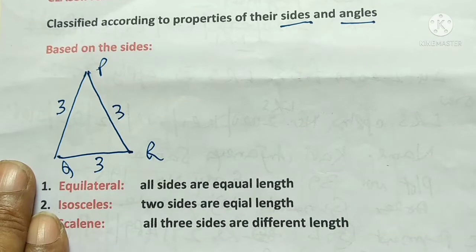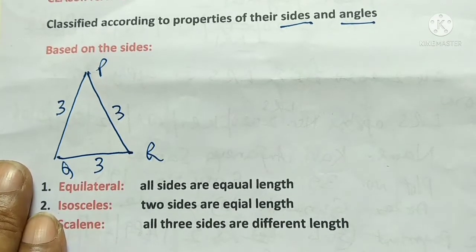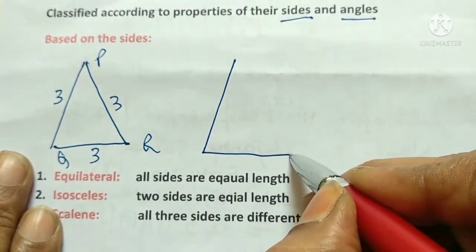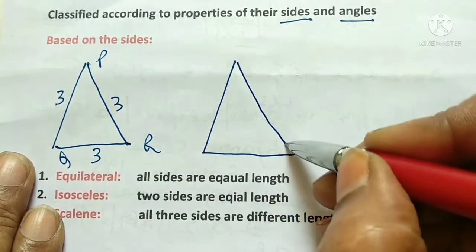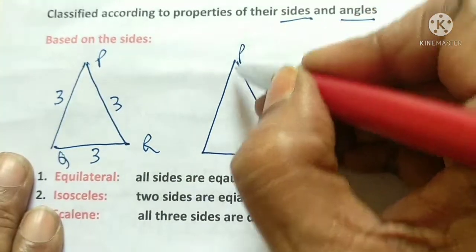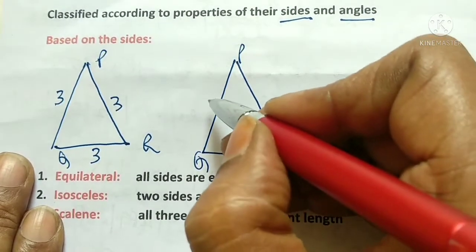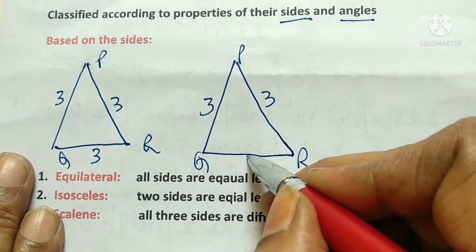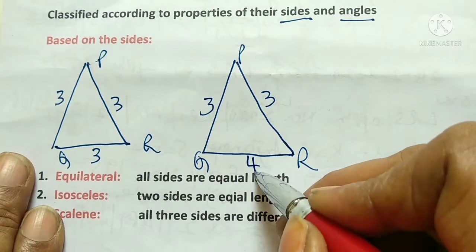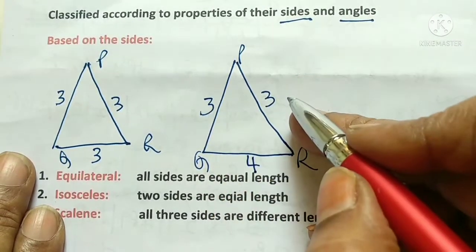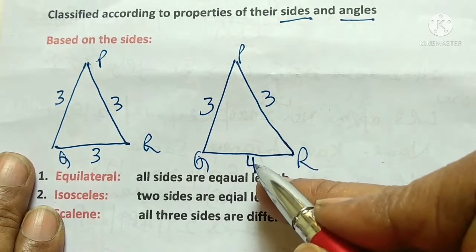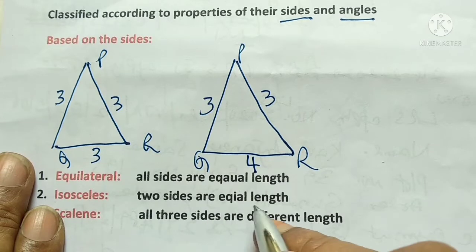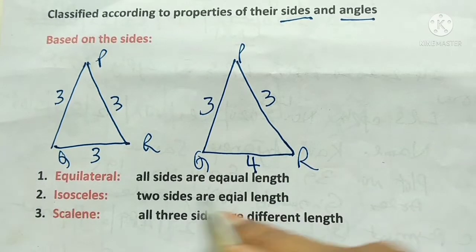This means it is an equilateral triangle. Now let us say another triangle PQR where this side is 3 centimeters, this is 3 centimeters, and this is 4 centimeters. In this triangle, two sides are equal in length. That means it is an isosceles triangle.